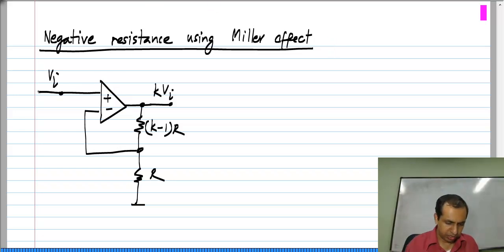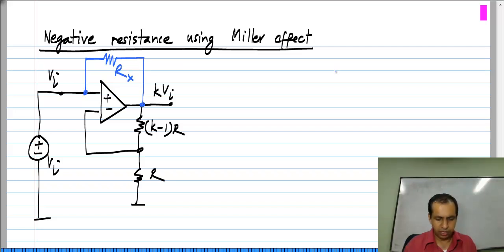Let me show the voltage source explicitly. And let us say I connect a resistance R x between the input and output. Then I will evaluate the resistance of this part of the circuit, between these terminals and ground. We apply a test voltage, find the current that is flowing in, and divide the voltage by the current to obtain the resistance.